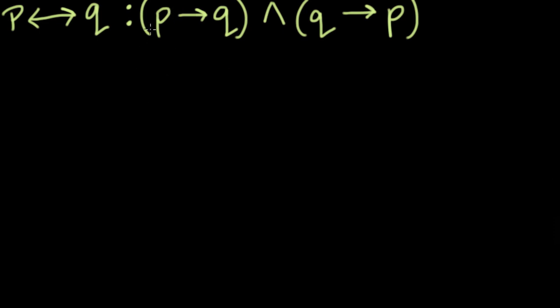So here, there's a way to negate this statement, right? We're going to negate P if and only if Q. And what happens here? Well, let me work you through the steps, and then show you in a truth table that this actually does make sense.